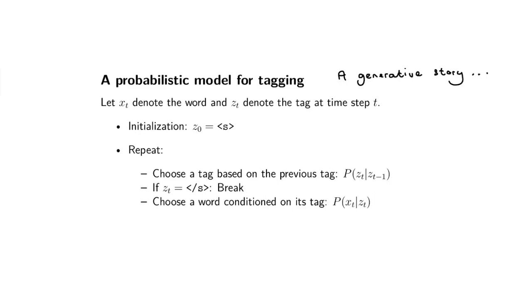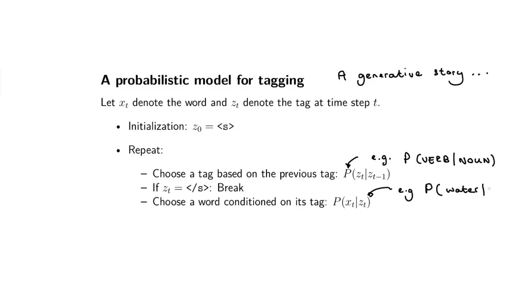I also need the probabilities. For this step I need to know: what is the probability of going to a verb given that the previous step was a noun? And for this step I need to know: what is the probability of, for example, the word 'water' given that I sampled a verb in the previous step? If I have all of these probabilities given to you beforehand in big tables, you should be able to write a Python script that generates sentences from this little generative story.